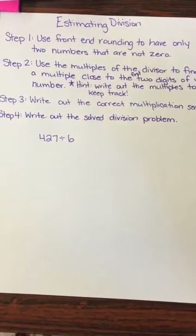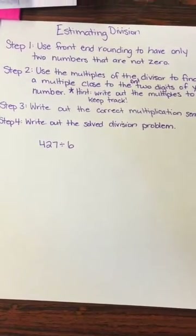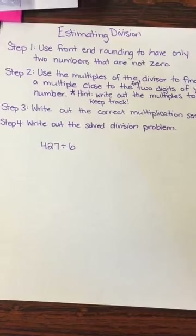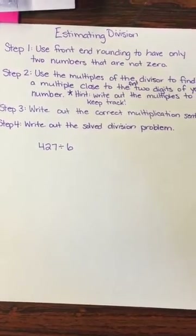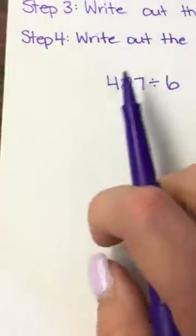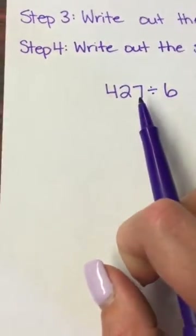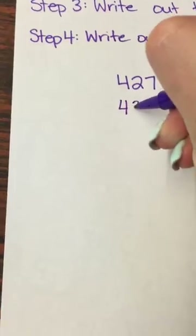Estimating Division. Step 1: Use front-end rounding to have only two numbers that are not zero. If I look at my example, 427 has three digits that are not zero, so I'm going to round this to 430.